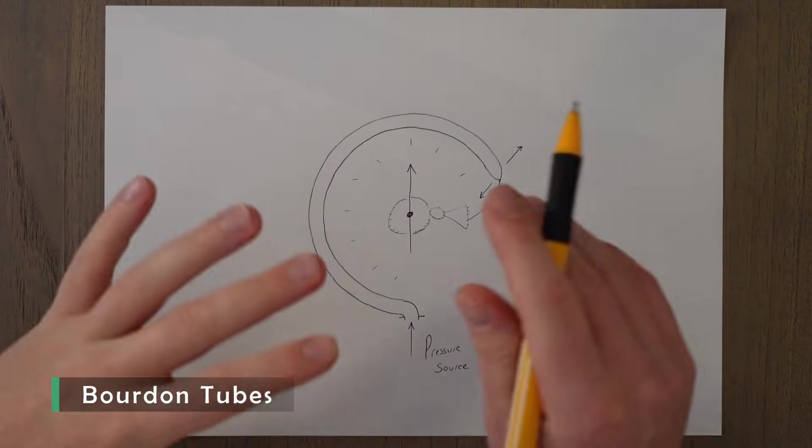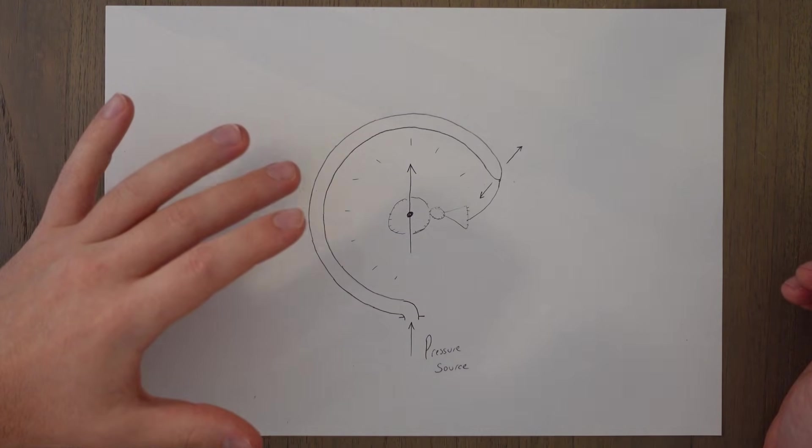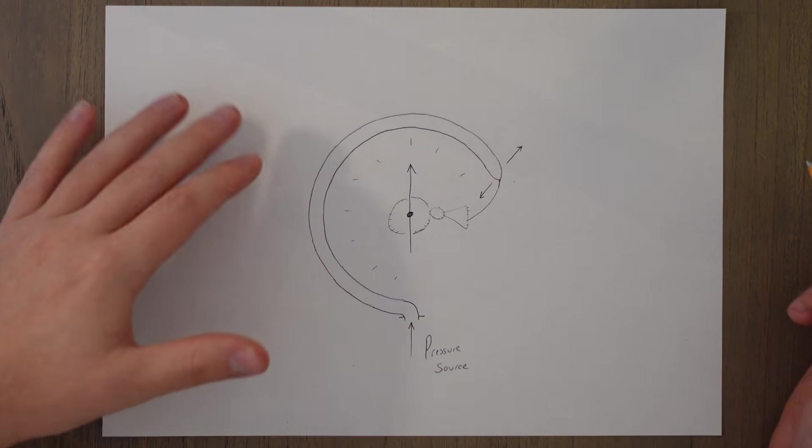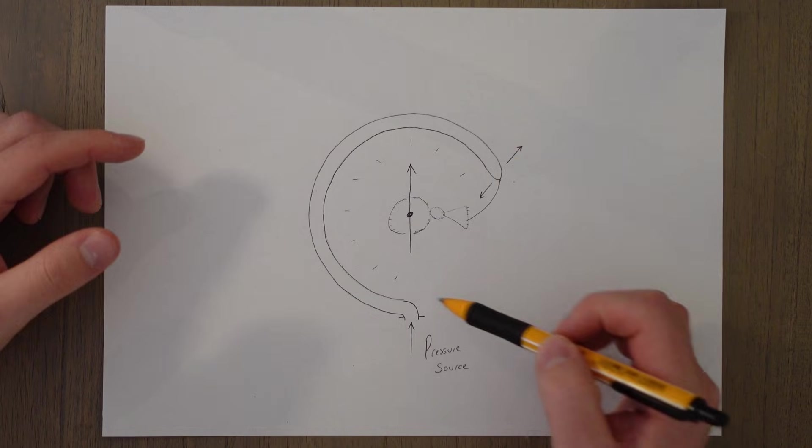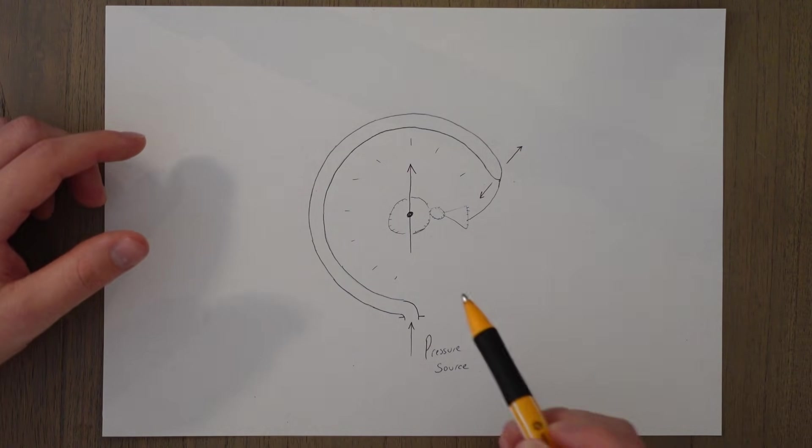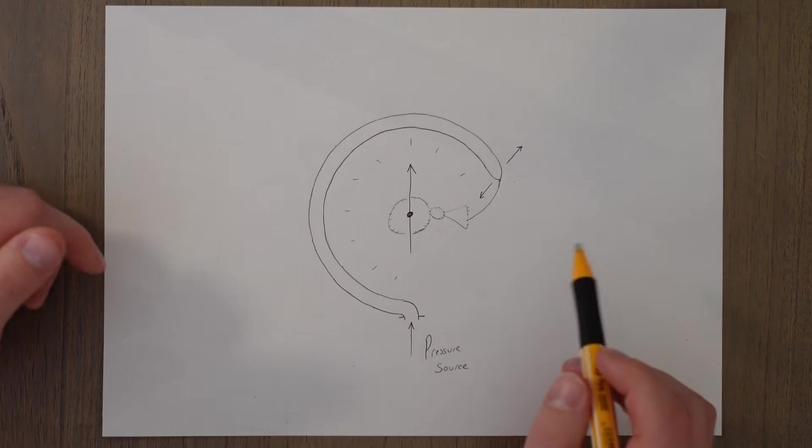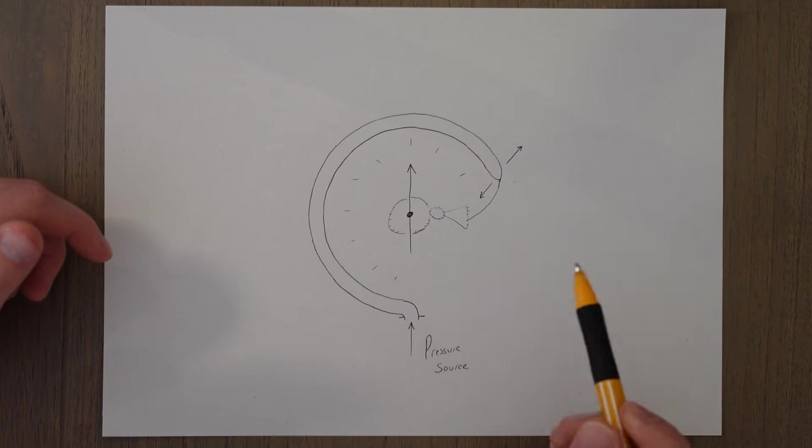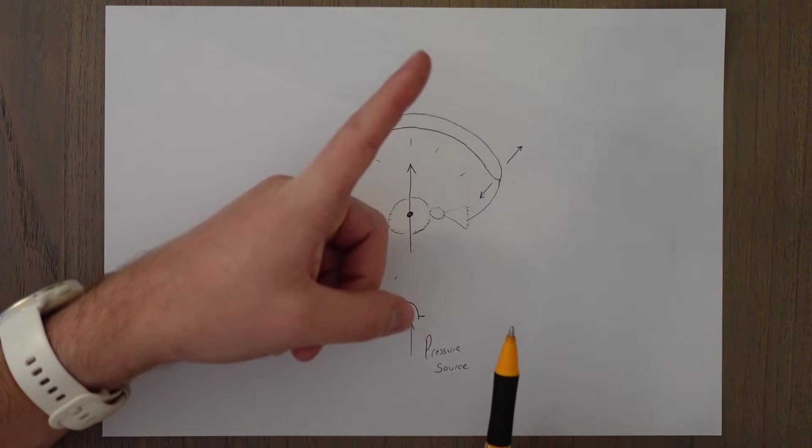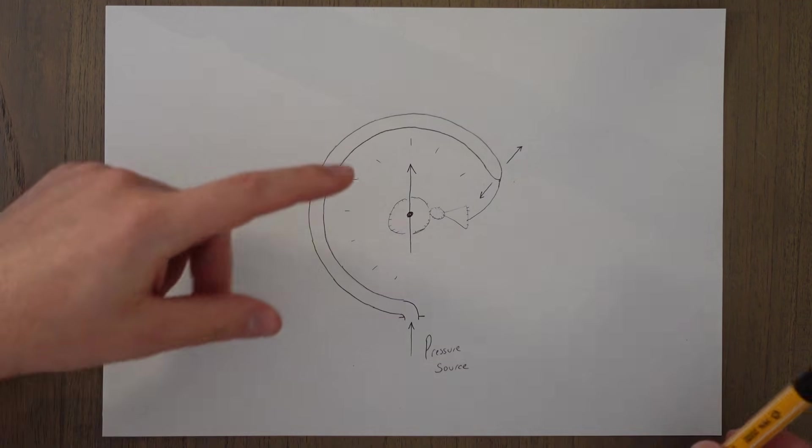While diaphragms, capsules, and bellows are membranes, essentially, the Borden tube uses a different principle for deformation. A Borden tube is a C-shaped tube, essentially. One end of the tube is sealed, and it's free to move. It can move up and down left and right, while the other end is fixed, but this is open to the pressure source. When pressure is applied, the tube attempts to straighten out. It's kind of like one of those things at parties that you blow into, and they make a honking noise. You know, they're sort of curled up like this, and you blow them, and you go, it's basically one of those, but it doesn't make a honking noise.